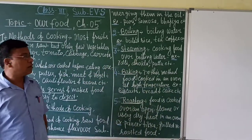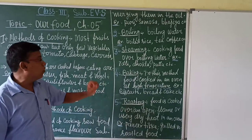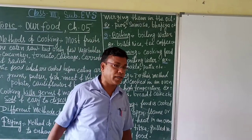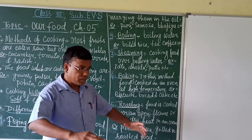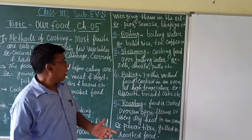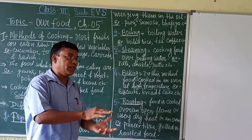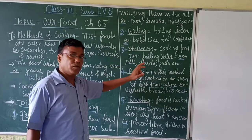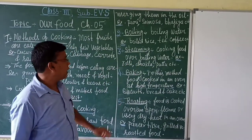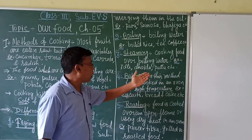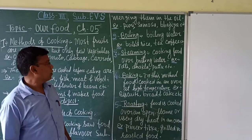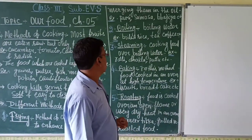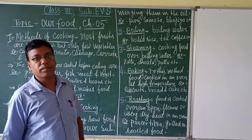The third method is steaming. In this method, food is cooked over boiling water. We do not place the food directly in the water; instead, the water is heated and the food materials are kept over the boiling water. Through the steam, the food gets cooked and ready. Examples include idli, dhokla, and similar foods. We all know how idli is cooked. This is the method of steaming.